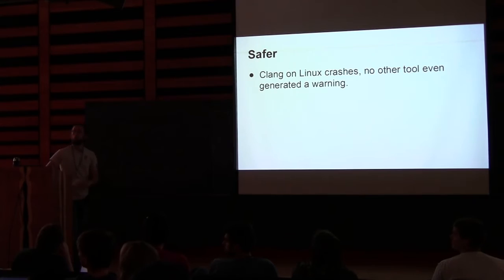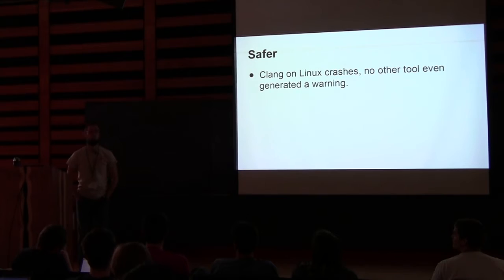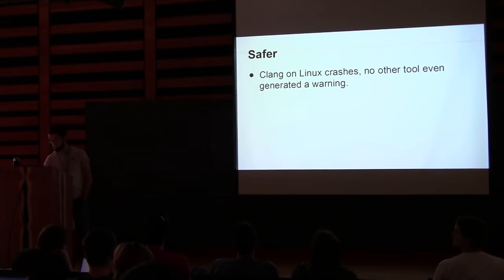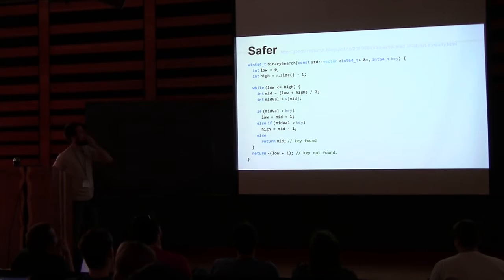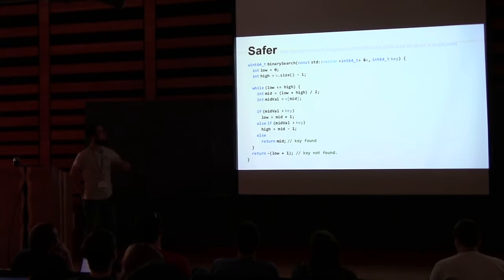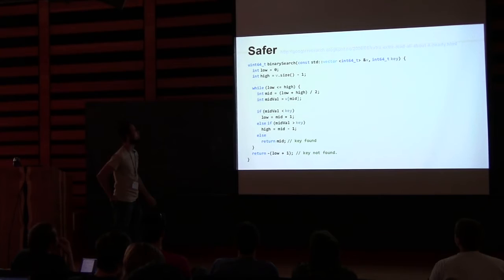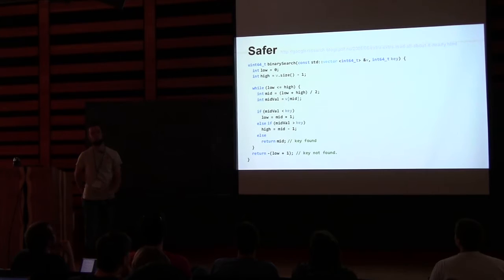Cross-platform code is safer. This is an example from a Google research blog post discussing that basically all binary search algorithms are broken. This code is broken, but generates no warnings whatsoever on GCC on Linux. Anyone? Signed integer overflow. That and more — everything is related to that category of problem. What is the size of an integer? At least 16 bits — it's unspecified, but practically, every platform I looked at, int is 32-bit. The size of size_t, or the size a vector can hold, is 64-bit on every 64-bit platform I tested.